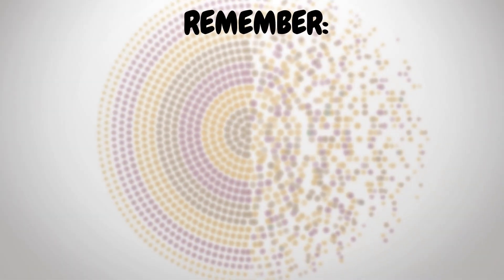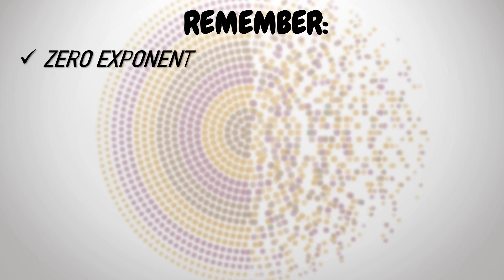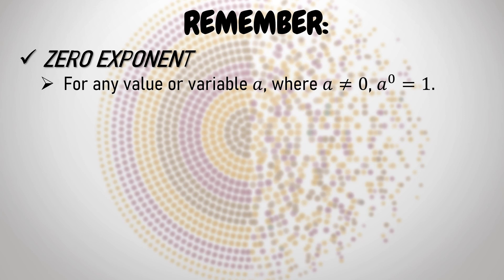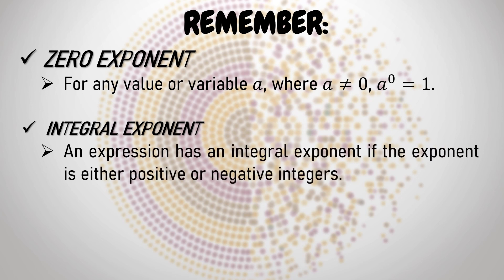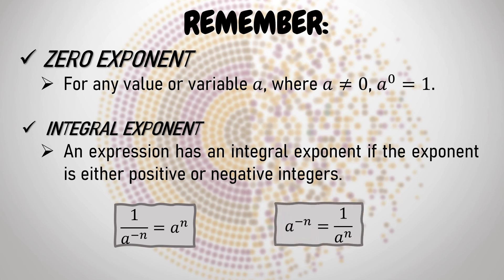To summarize: Zero exponent — for any value or variable a where a is not equal to zero, a raised to zero is always equal to one; for example, 1 million raised to zero is one. Integral exponent — an expression has an integral exponent if the exponent is either positive or negative integers. Two formulas: if 1 over a raised to negative n, the answer is a raised to positive n; if a raised to negative n (whole number), the answer is 1 over a raised to positive n.